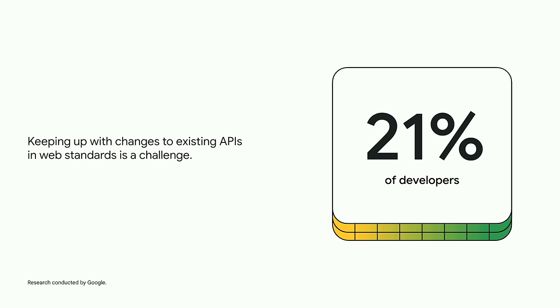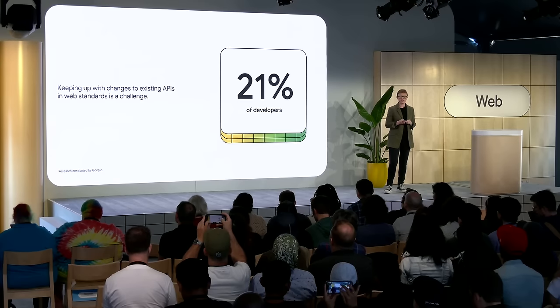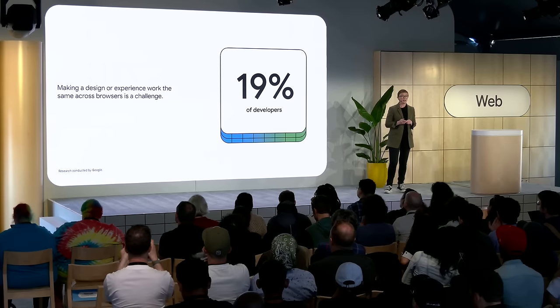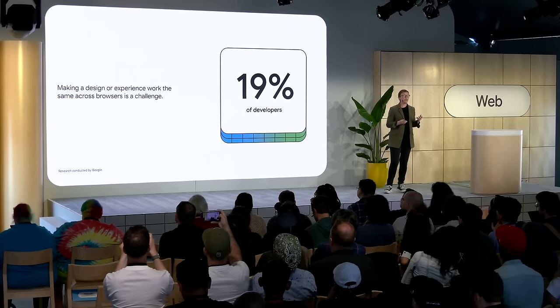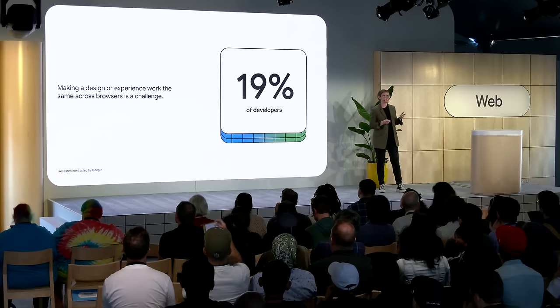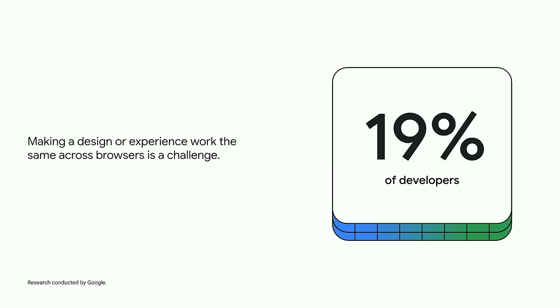When we add a new feature to an existing API, how do you know that's happened and how do you find out about that change and whether it's ready to use? And then another top challenge — something which has been a challenge ever since I started working on the web back in 1997 — is how do you make a design or an experience work the same across browsers? These challenges come up every time we run these surveys and are always at the top of the list for web developers.